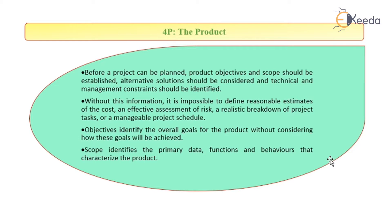The product. A product is the final outcome for which all the stakeholders are working together. Before a project can be planned, the product objectives and scope should be established, alternative solutions should be considered, and the technical management constraints should be identified. In order to have a good quality product, all the discussion should take place regarding the objectives, scope, needs, and outcomes in advance before the actual beginning of the software development life cycle.